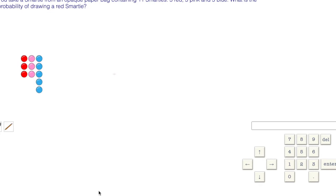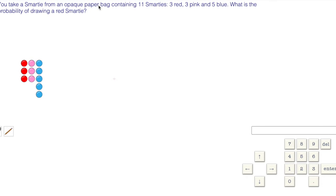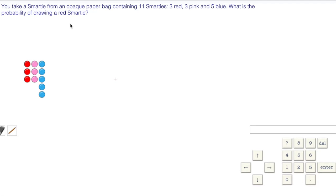Here's a level three TED question. You take a smartie from an opaque paper bag containing 11 smarties: three are red, three are pink, and five are blue. What is the probability of drawing a red smartie? It is the number of desired outcomes—there are three red—out of the total number, which is eleven. Three out of eleven.